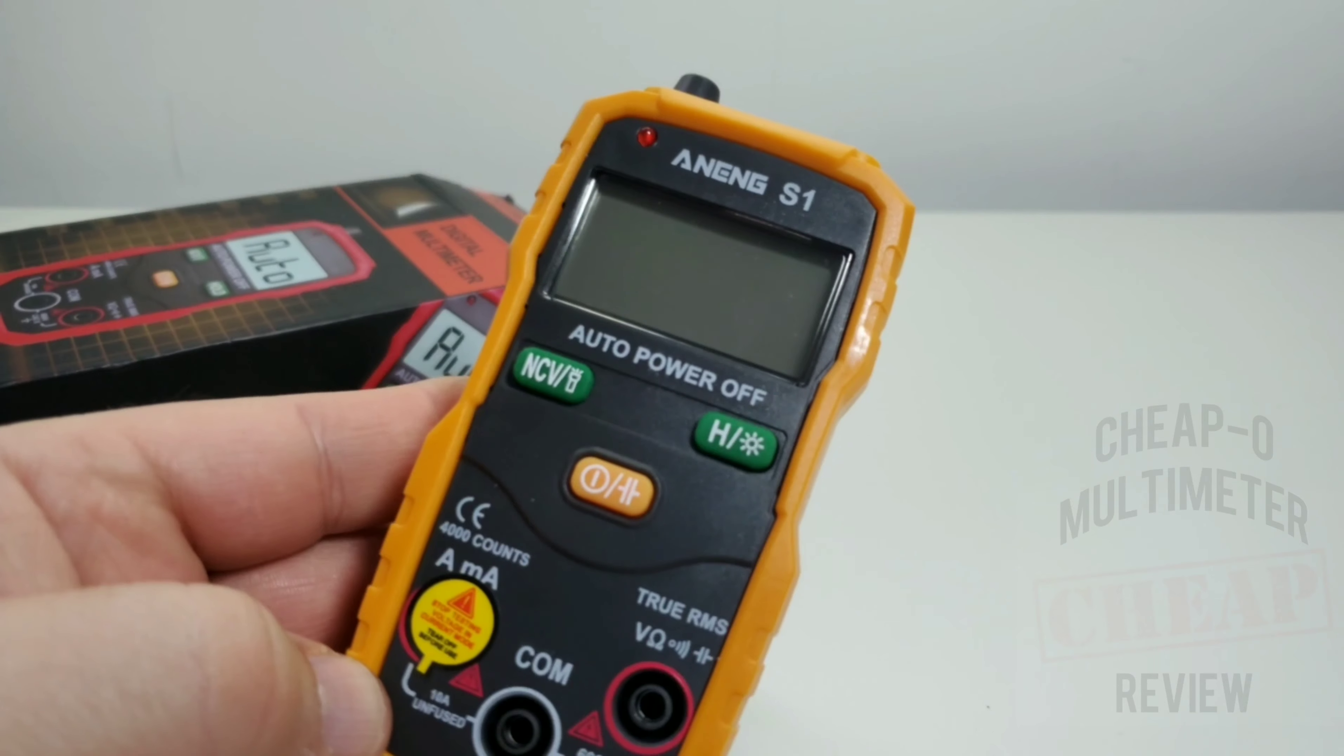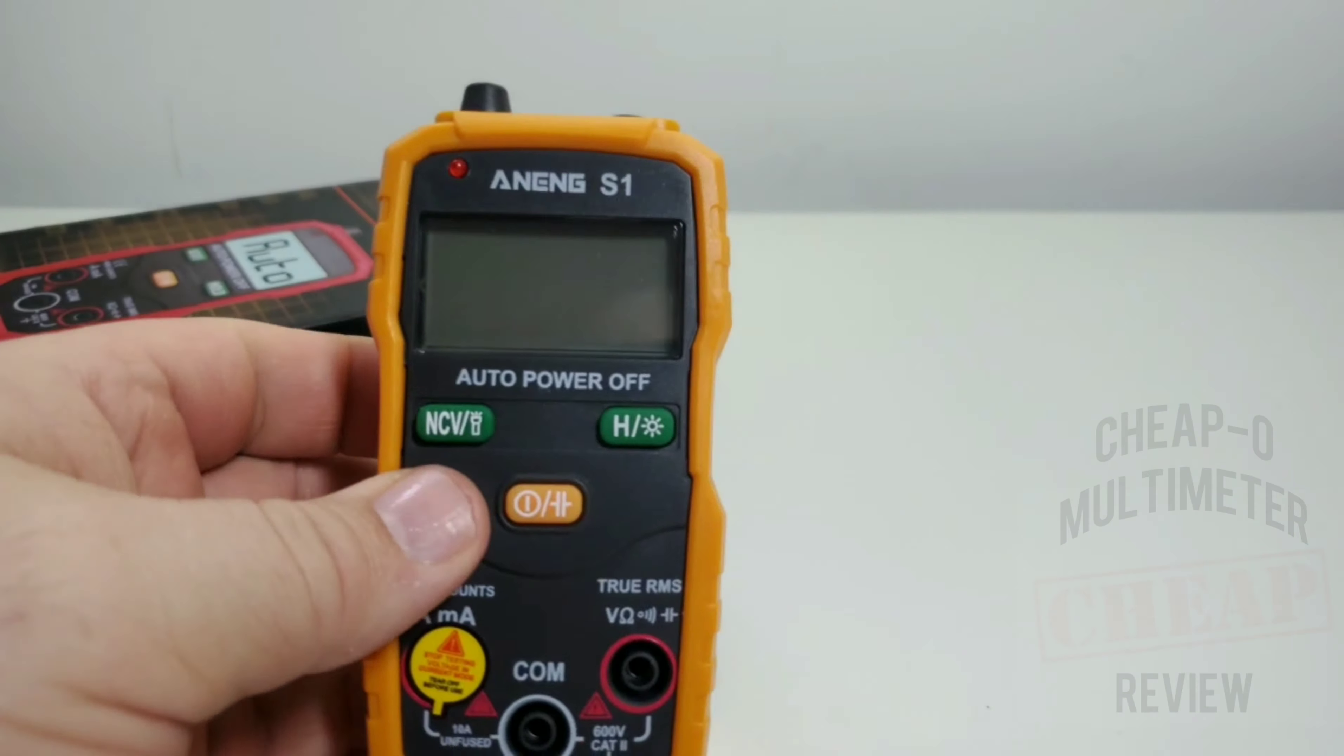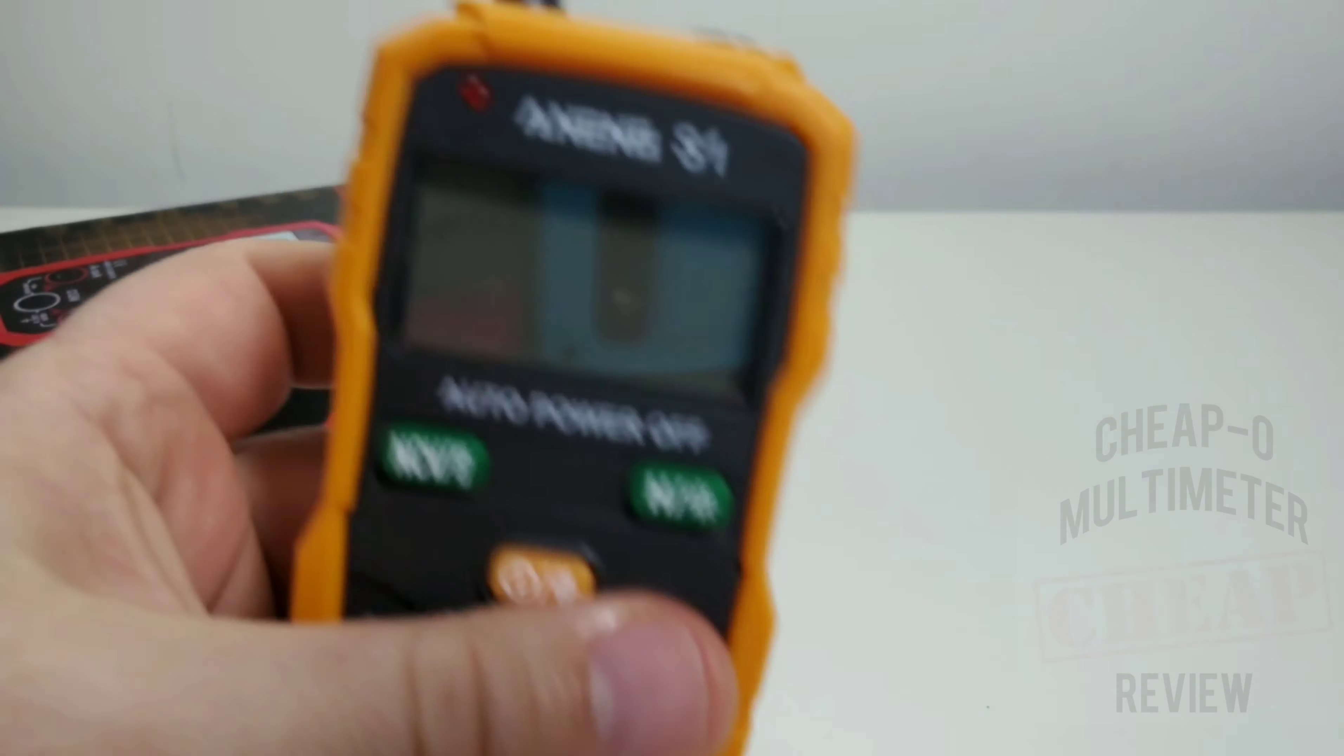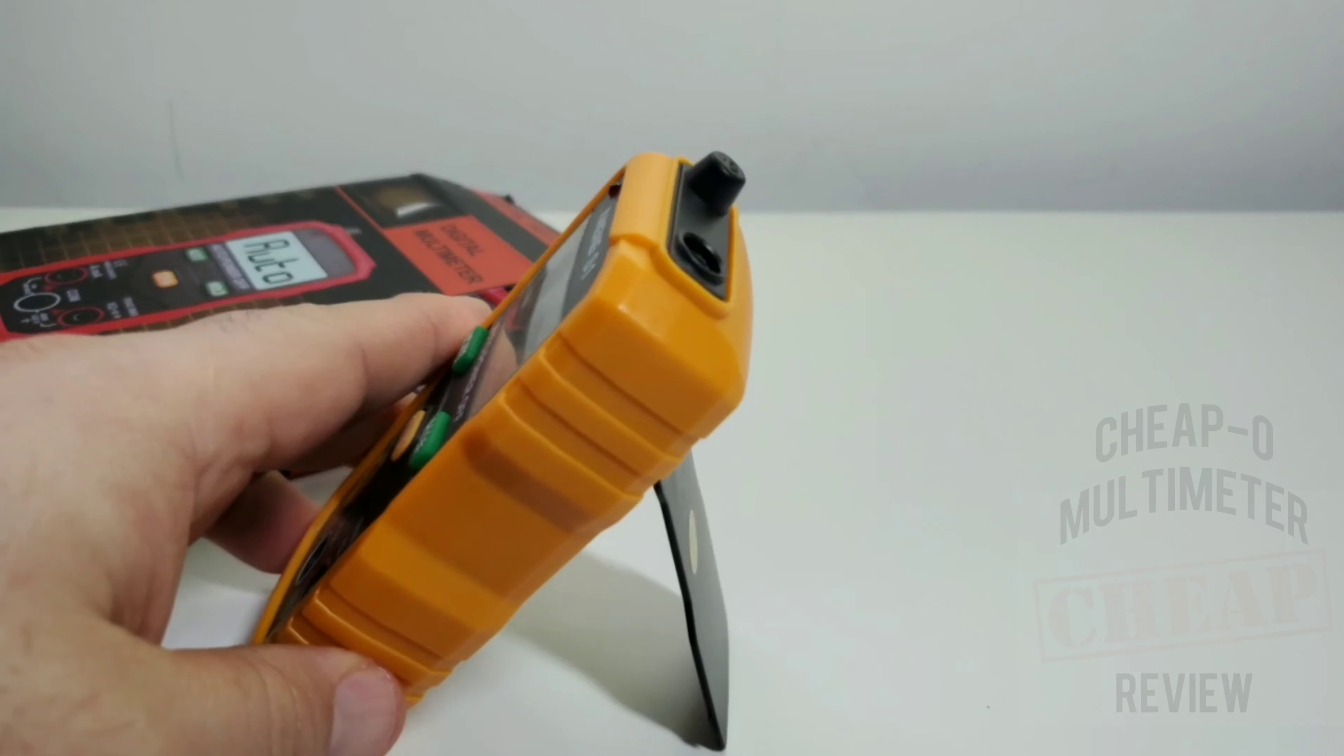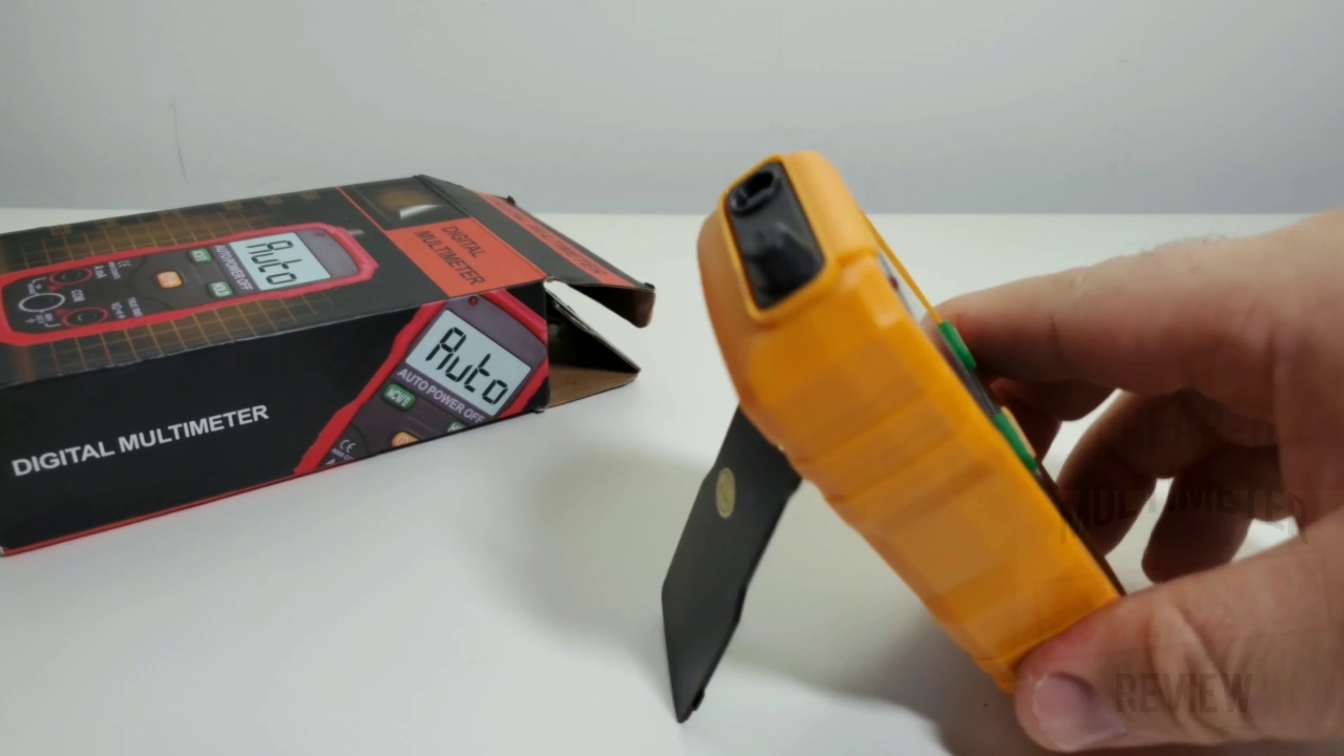Once again being a smart meter there is no selector switch, rotary or otherwise. No, we're stuck with our push button in and out, simple as that.